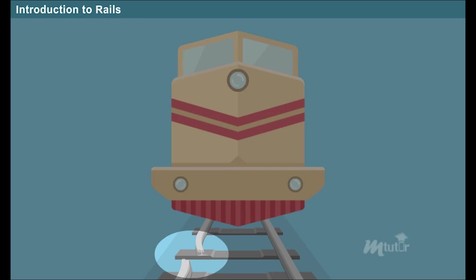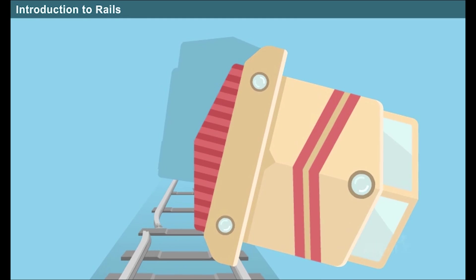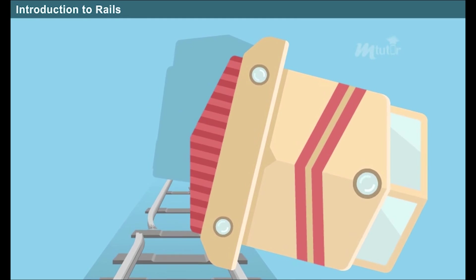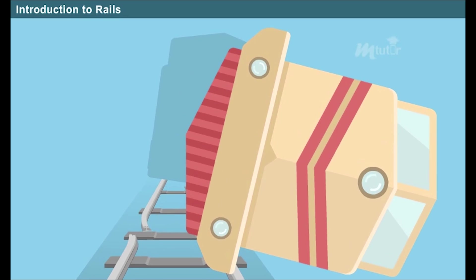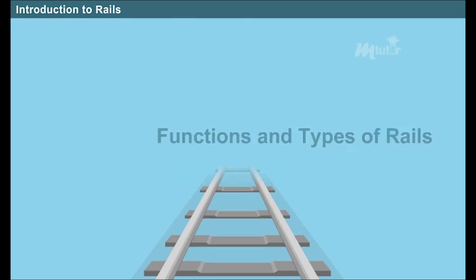If one rail is broken, defective, or misaligned, it may lead to railway accidents. Thus it is clear that rails serve as the main element for the proper functioning of the railways. In this lesson we shall be learning the functions and types of rails in detail.